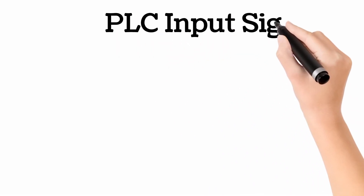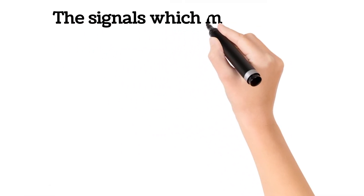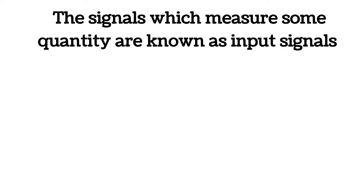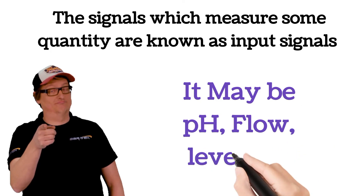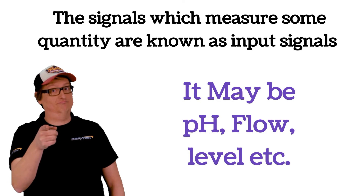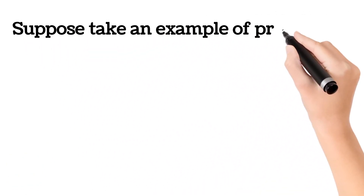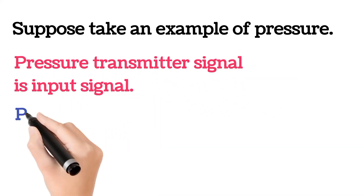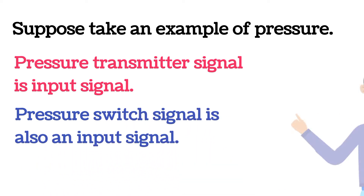The signals which measure some quantities are known as input signals. These quantities may be pH, flow, level, temperature, etc. For better understanding, let's take an example: a pressure transmitter signal is an input signal, and a pressure switch signal is also an input signal.